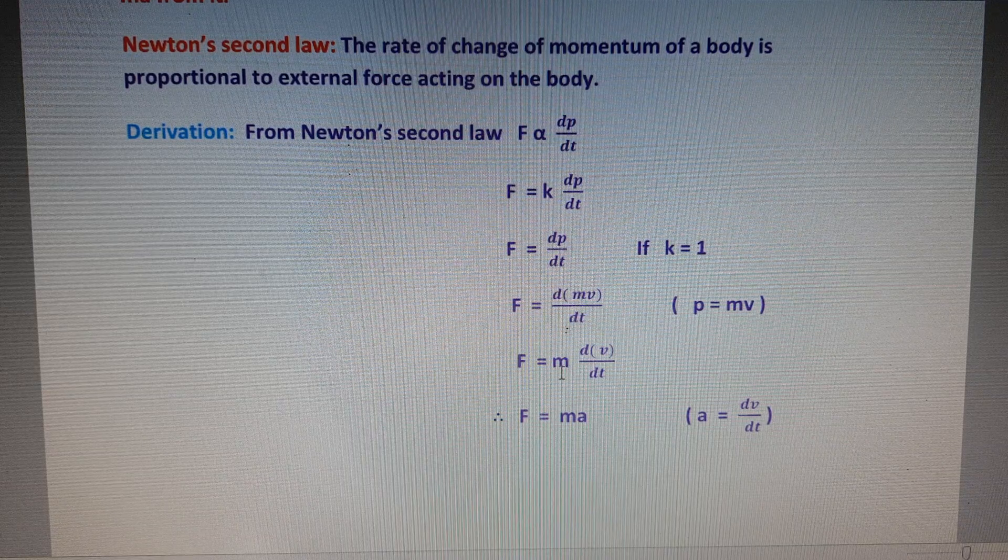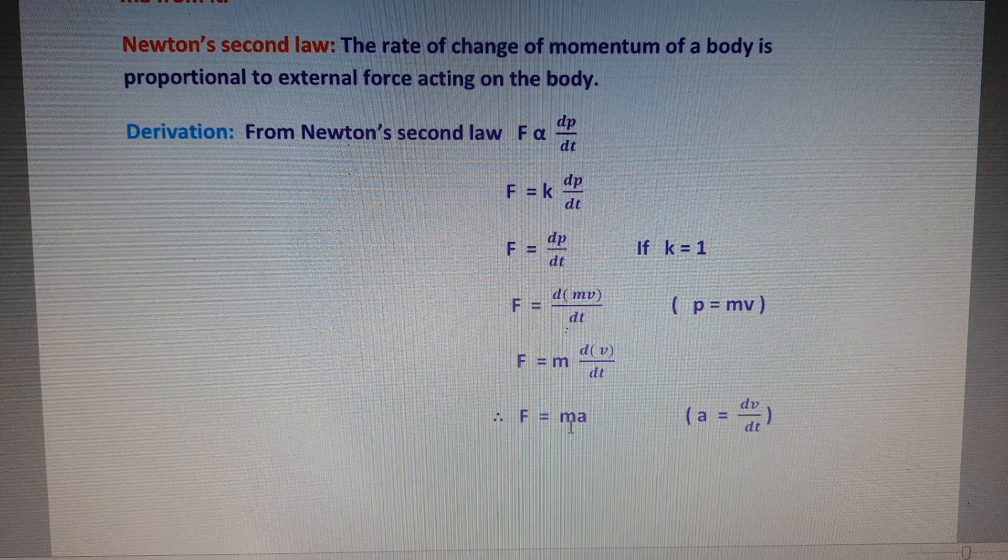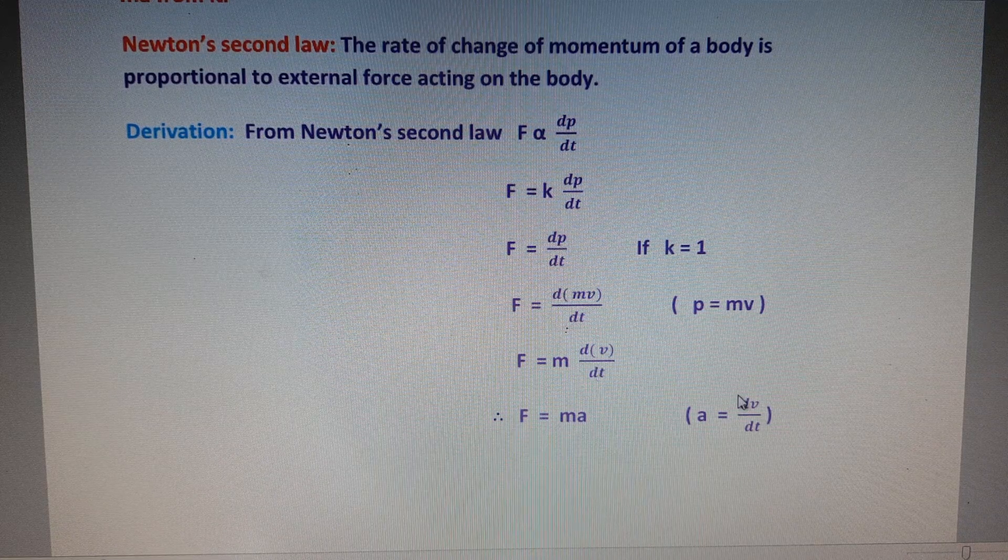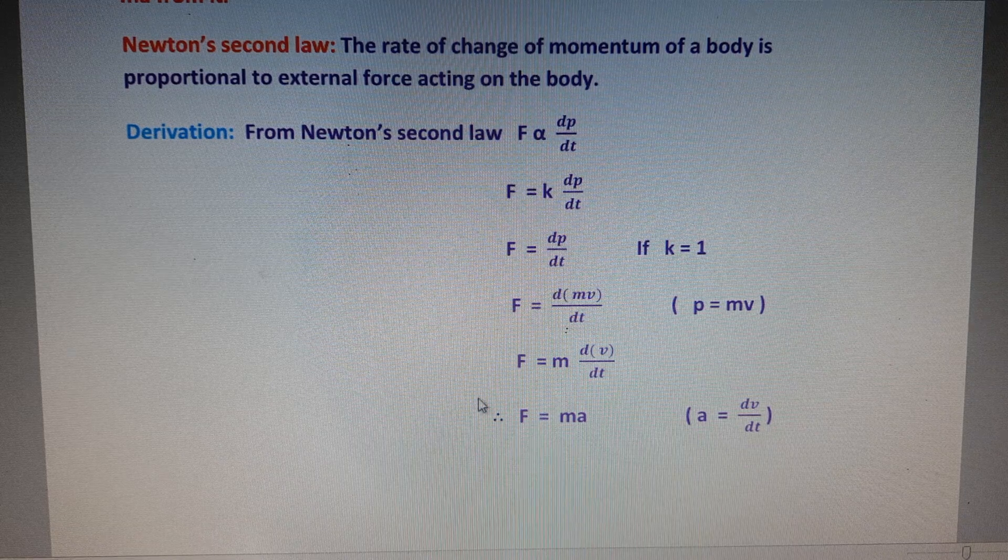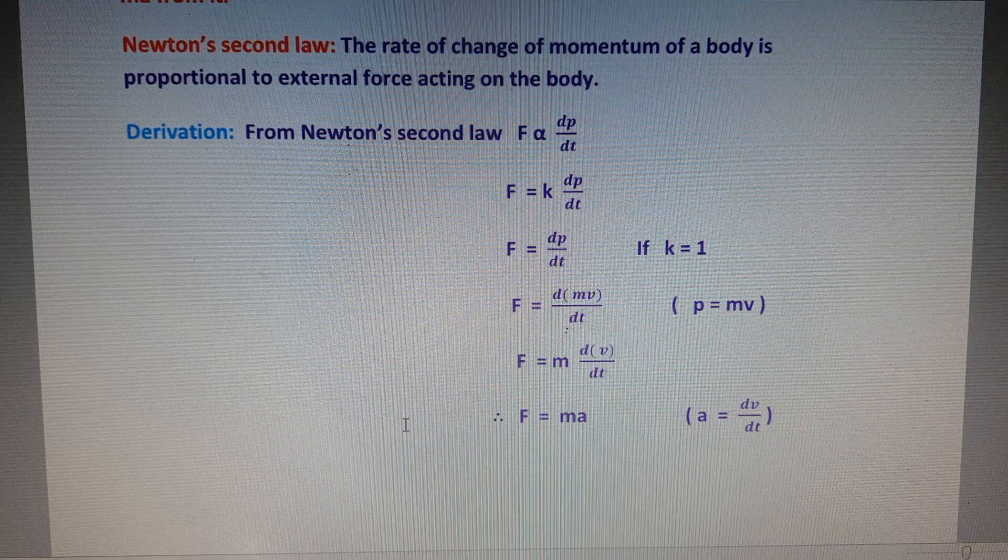F = ma, because dv/dt is the rate of change of velocity, which is called acceleration. So the final equation is F = ma.